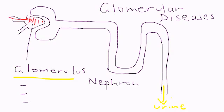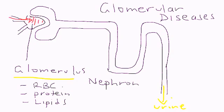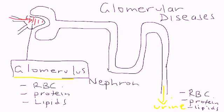And which large molecules are those? Well, you have red blood cells, protein, and lipids. These are not supposed to be in your urine. So if they show up — for example, if you have blood in your urine, red blood cells, or if you have protein in your urine, or lipids in your urine — then that means there's a problem at this level, because large molecules normally don't filter through into the nephron. They're too big.